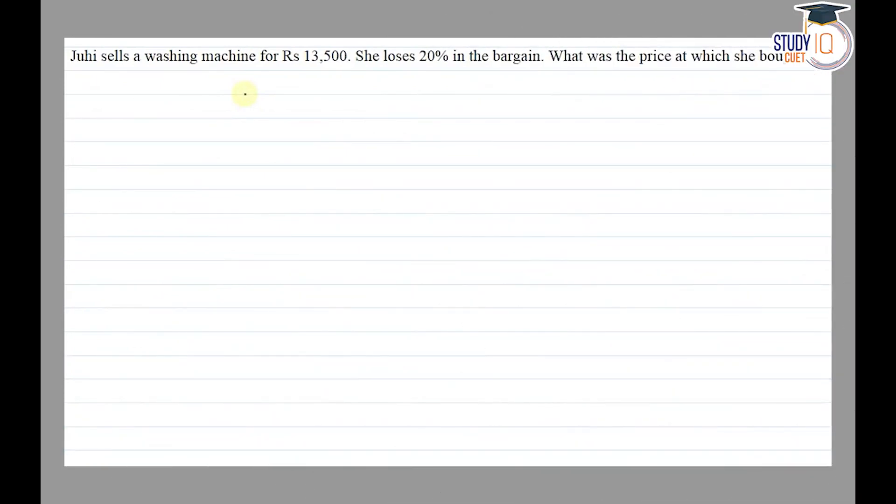Hello everyone, this question appears in Class 7th NCERT chapter of Comparing Quantities. This is question 6 of exercise 8.3. The question says that Juhi sells a washing machine for rupees 13,500. She loses 20% in the bargain.